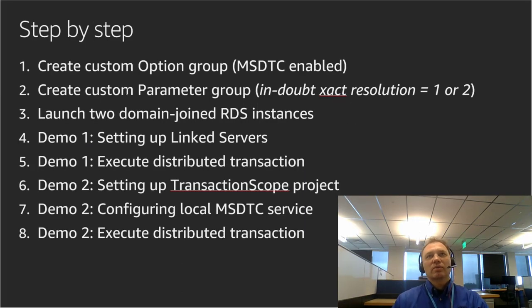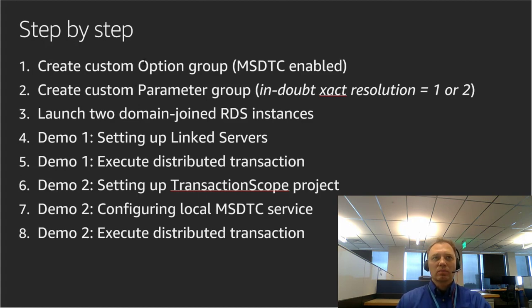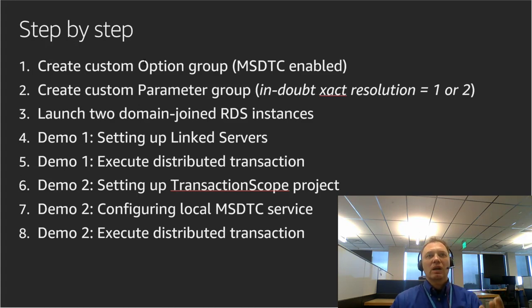Step by step from the very top. First, we're going to create our custom option group and enable MSDTC. Second, we'll create our custom parameter group and modify the in-doubt transaction resolution setting — we will set it to 1. Third, we will launch two domain-joined RDS instances. Steps four and five are Demo One, and steps six, seven, and eight are Demo Two. We're going to explore two very different ways of configuring MSDTC.